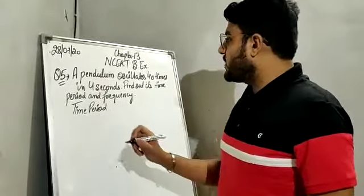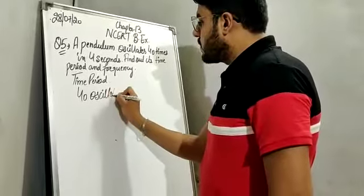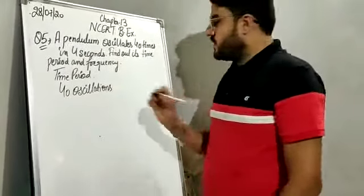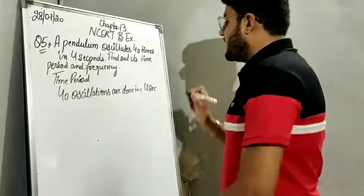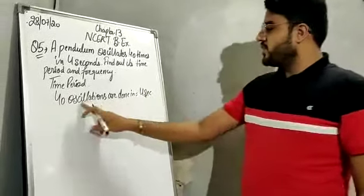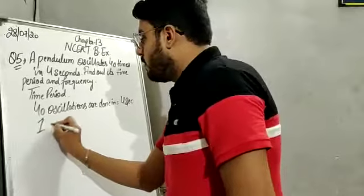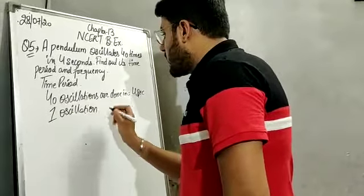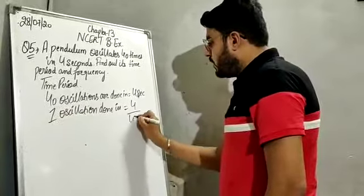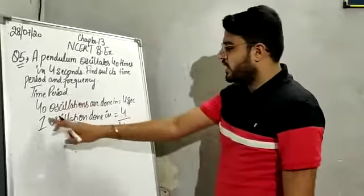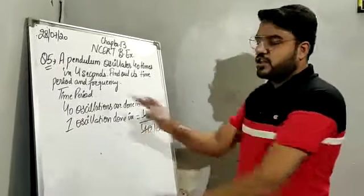In the question it is given that 40 oscillations are done in 4 seconds. Time period is the time taken to complete one oscillation, so by the unitary method, one oscillation will be done in 4 upon 40 seconds. Since 4 tens are 40, the time taken to complete one oscillation is 4 divided by 40.